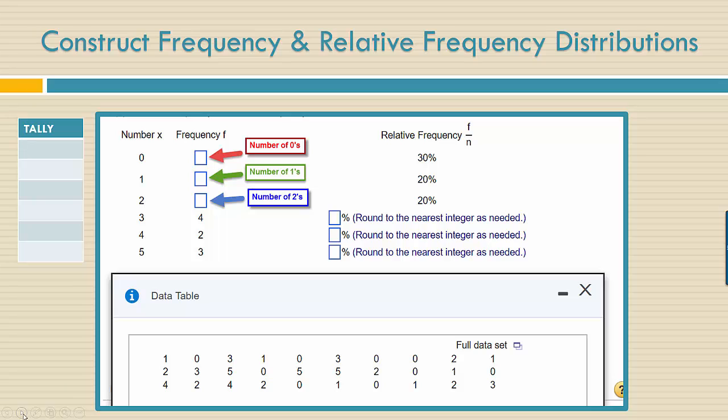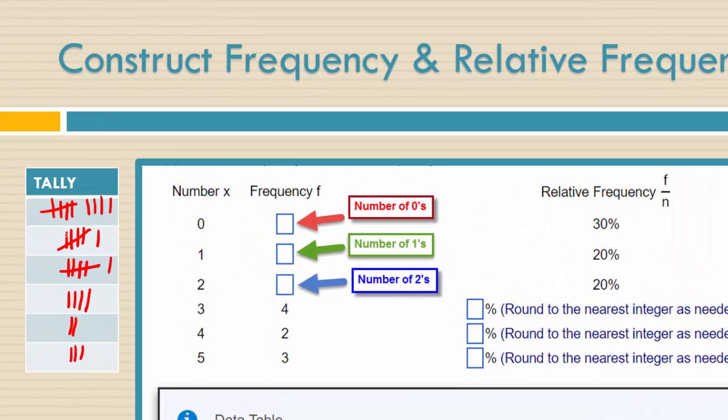One way we could find that is to do a tally. Down here we have the data values: one, zero, three, one, zero, three, zero, zero, two, one, two, three, five, zero. I'm marking through it to indicate five of those now. Then five, five, two, zero, one, zero, four, two, four, two, zero, one, zero, one, two, and three. Let's see what we have here. In the zero row we have nine. In the one row we have six. And in the two row we have six.